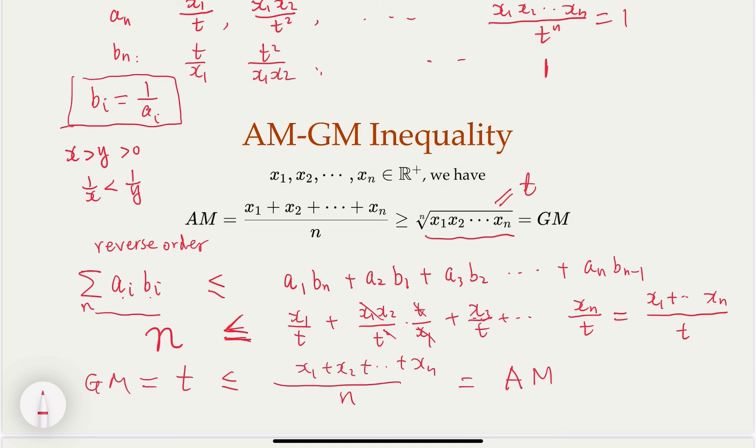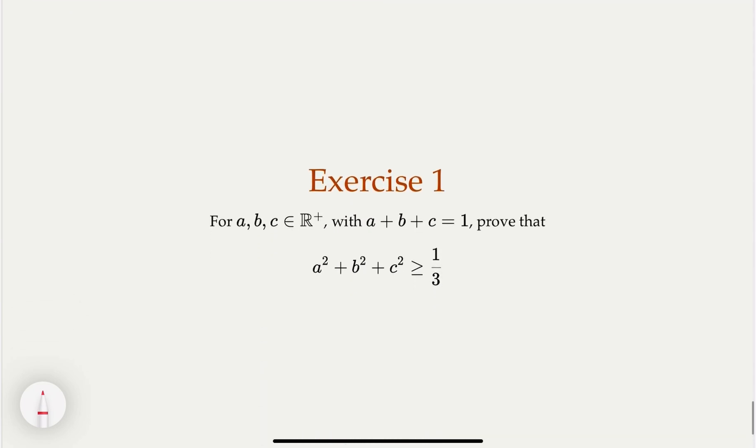So we're going to have an exercise for you. Try to prove this statement, where a, b, c are positive numbers that sum up to 1. Prove that the sum of squares is greater or equal to 1 third. Give it a try. We're going to show the solution in part 3 of this video, where we're going to show this example and a few other examples. Hope you enjoy the video and please subscribe to the channel. Thank you.